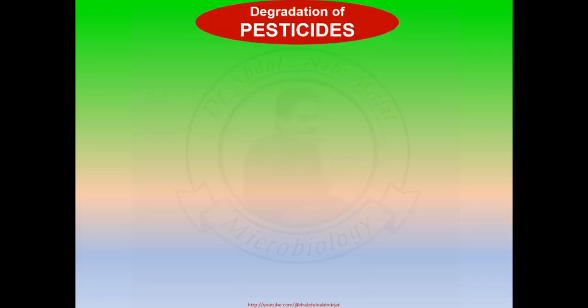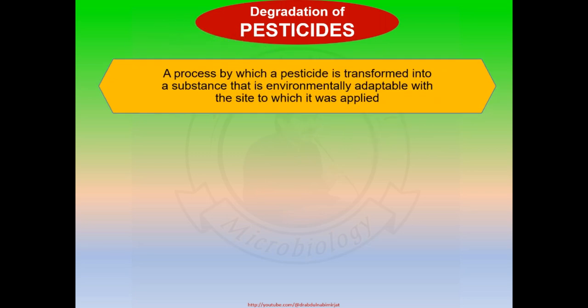Degradation of pesticides is a process by which a pesticide is transformed into a substance that is environmentally compatible with the site to which it was applied.